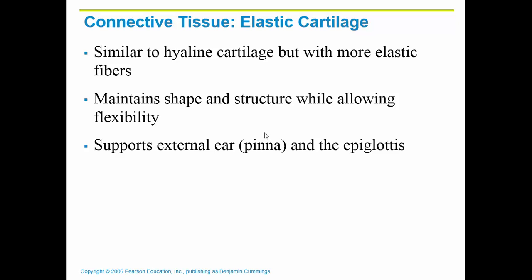Elastic cartilage is similar to hyaline cartilage, but it has more elastic fibers, so it is able to stretch and has more flexibility. You will find elastic cartilage in your ear — your external ear is made of cartilage, and some people pierce that portion. The epiglottis is also made of elastic cartilage. The epiglottis is a flap that allows you to swallow and breathe, covering your trachea when you swallow so that food particles do not go down the trachea.